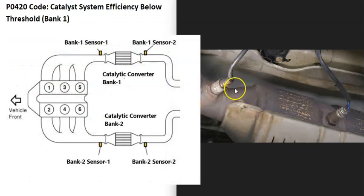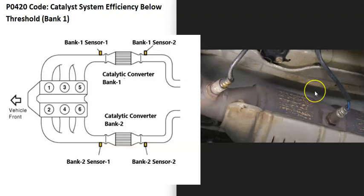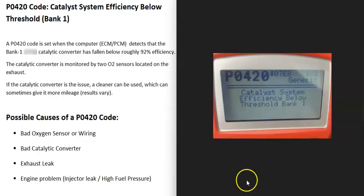There's sensor one, also called the upstream O2 sensor, located before the catalytic converter, and sensor two, also called the downstream O2 sensor, located after the catalytic converter — sometimes right on it. So what are some possible causes of a P0420 code?